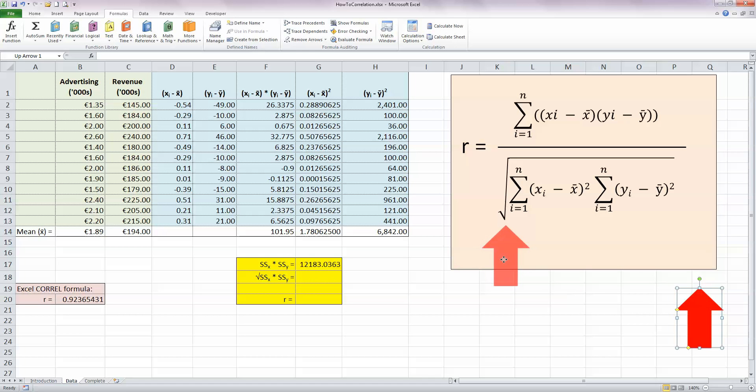Next, the final part of the denominator is to take the square root of that figure. So I'm just going to put that on the next line in my yellow box here, equals square root. The formula for that is equal SQRT, opening bracket, and just click on the value above, closing bracket and press enter.